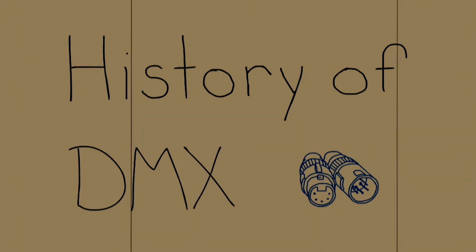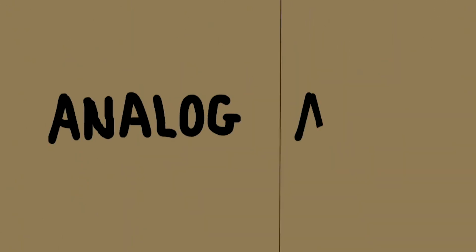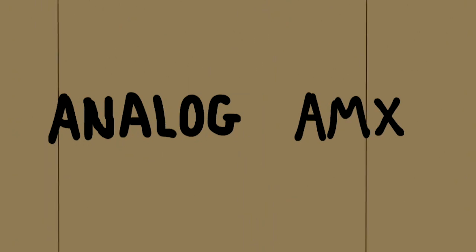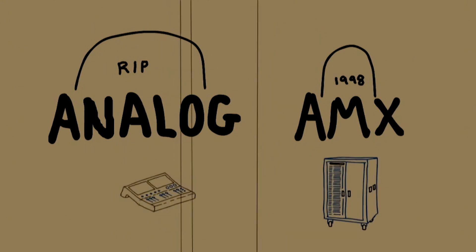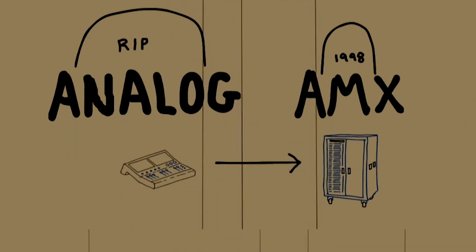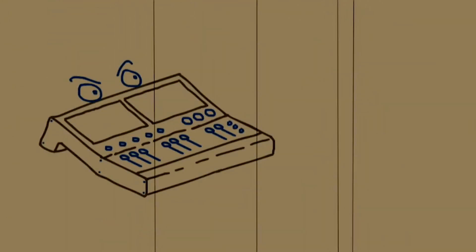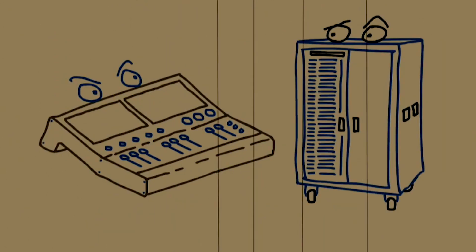Part 3. History of DMX. Now we're going to talk about how the signal gets sent from the console to the fixture. In the old days, we used an analog signal, and as the industry progressed, it went into the AMX signal. We won't talk about these too much because these systems are pretty much dead. These both would send the signal from the console to the dimmer.